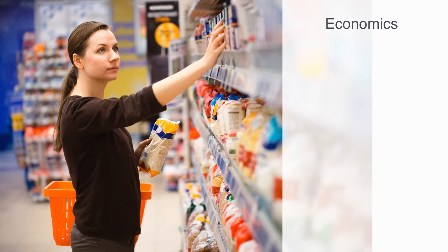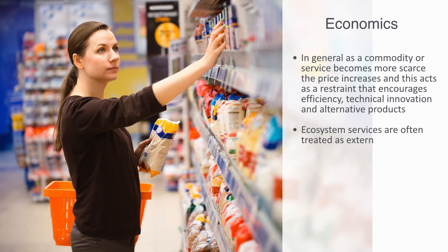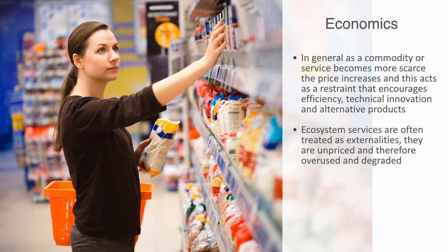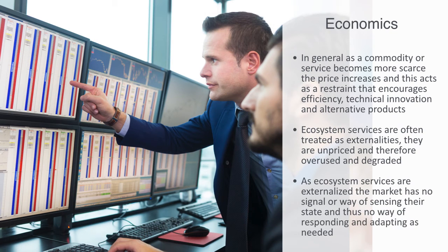On its most basic level, the market economy engineers an adaptive capacity into the pricing system: as a commodity or service becomes more scarce, the price increases, acting as a restraint that encourages efficiency, technical innovation, and alternative products. However, this only applies when the product or service falls within the market system. Since ecosystem services are often treated as economic externalities, they are often systematically underpriced and therefore overused and degraded. The pricing of ecosystem services is an important part of enabling this feedback loop to function. As long as ecosystem services are externalized, the market has no signal to sense their state and no way of responding and adapting. This broken economic feedback loop has been a major critique of the free market system and identified as a central cause of current environmental problems at the global scale.